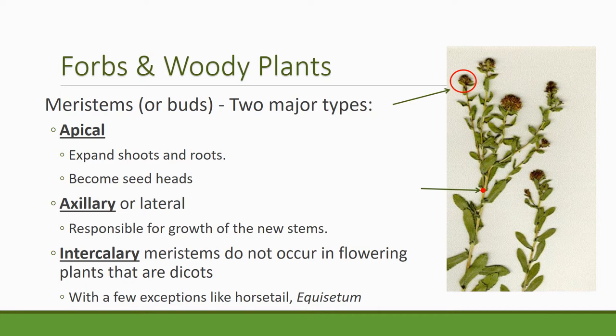Axillary buds are in the leaf axils or stem axils, and they're responsible for new stems. You'll see a red dot kind of in the middle of this slide — that would be an axillary bud, and that's where all of those shoots off that main stem were formed from axillary buds. Forb and woody plants don't have intercalary meristems. There are some interesting exceptions, like Equisetum, which is horsetail — it's a plant that doesn't have leaves, just a stem, so it does have intercalary meristems.